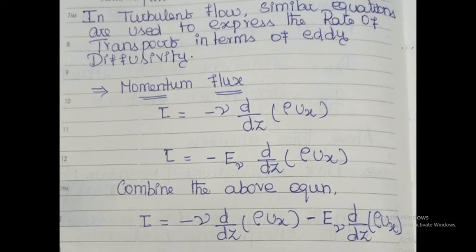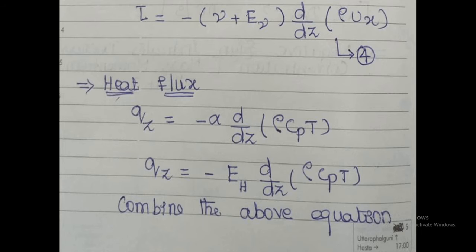Combining the above two equations, the total flux for momentum transfer equals the flux due to viscous (laminar) flow plus the flux due to turbulent flow. So tau equals minus nu times d/dz(rho ux) minus e_nu times d/dz(rho ux). The final expression, taking the common term, is: tau equals minus (nu + e_nu) times d/dz(rho ux).